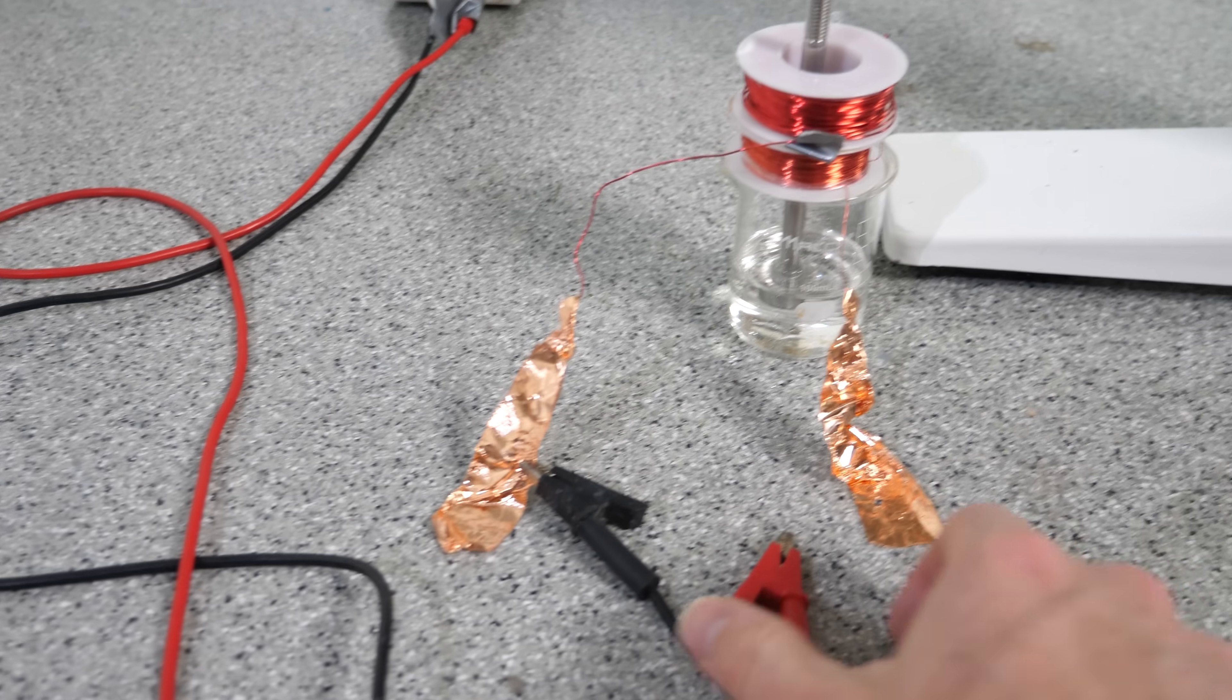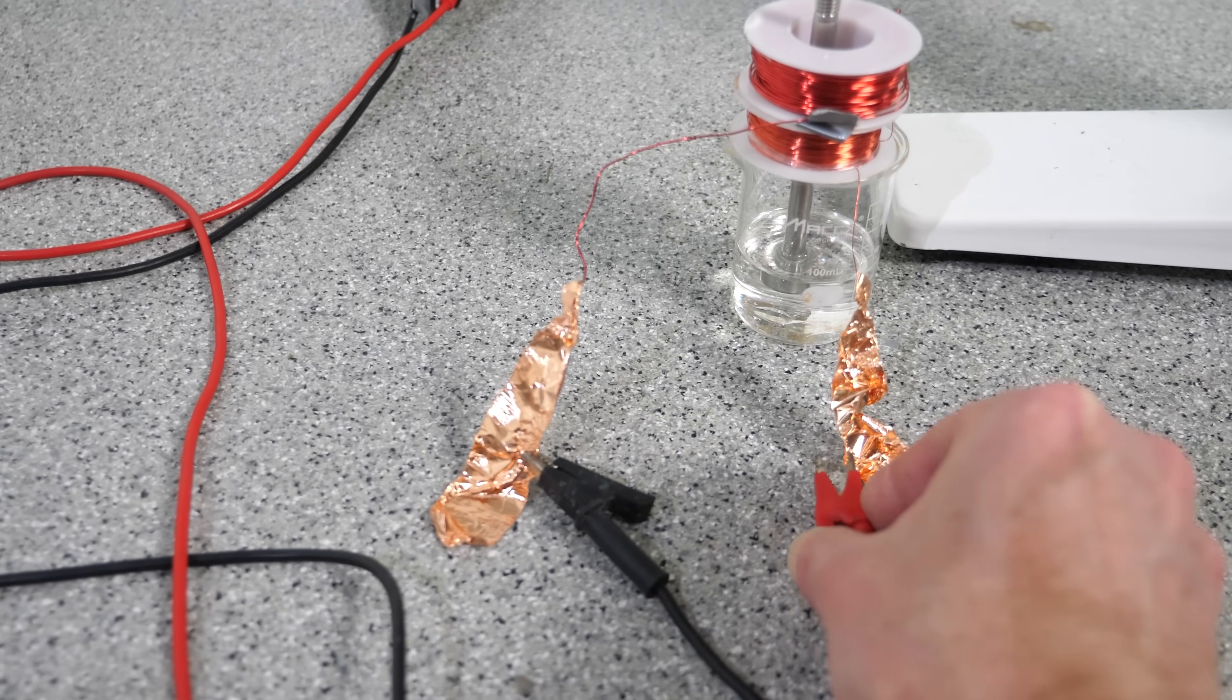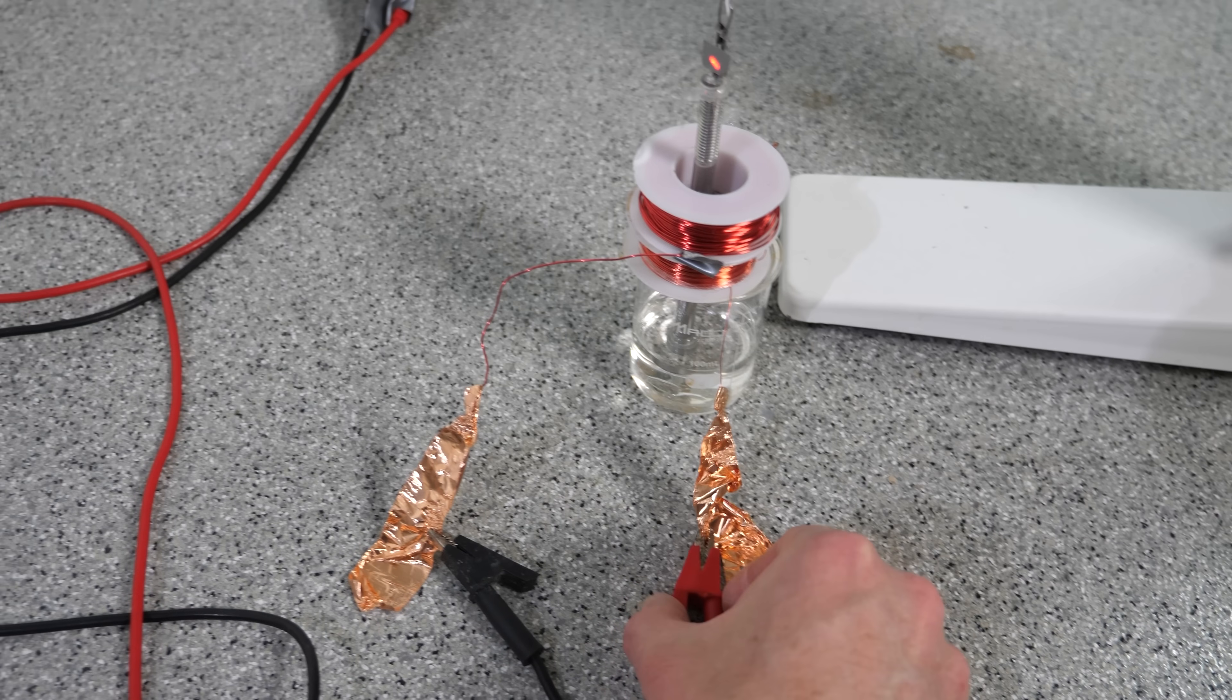This experiment is one of my favorite experiments because it takes something as abstract as quantum mechanics and makes it visible in the real world. Electron spin isn't just some theoretical concept. It's a real angular momentum that we can see a macroscopic effect of.